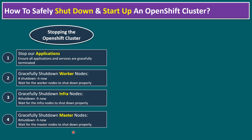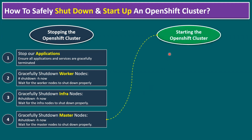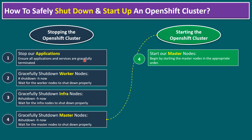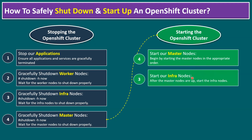Once shutdown is completed, we have to start up the OpenShift cluster nodes. The startup procedure is slightly different — it is the reverse of the stopping procedure. The startup order goes from bottom to top (steps 4 to 1). The first startup step is to start the master nodes. Remember: while shutting down we shut down worker nodes first, but while powering up we power on master nodes first. Follow the appropriate order: master-0 first, then master-1, then master-2. Once the three master nodes are up, start the infrastructure nodes.